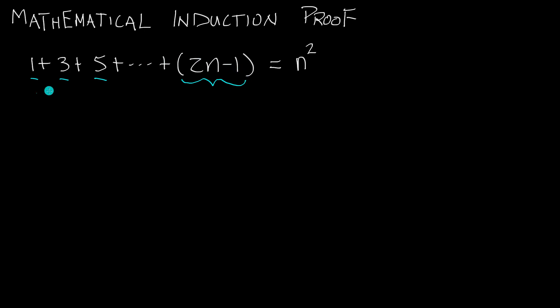So how exactly does that work? Well, this first term, the 1, represents the term where n is equal to 1. The 3 represents n equals 2, and the 5 represents n equals 3.